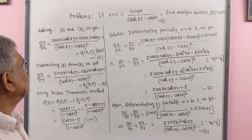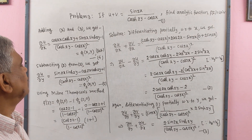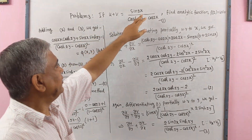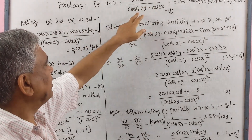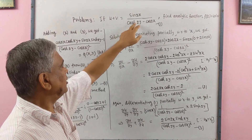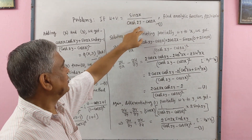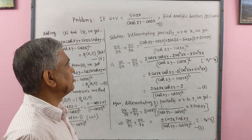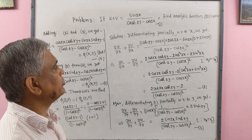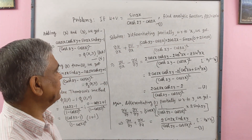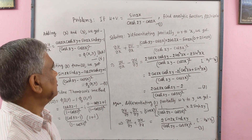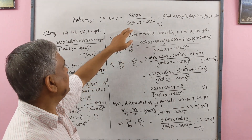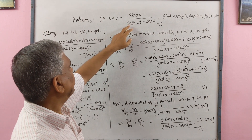Now we solve Problem 3. Given u + v = sin 2x / (cosh 2y − cos 2x), find the analytic function f(z) = u + iv. We begin by differentiating partially with respect to x.